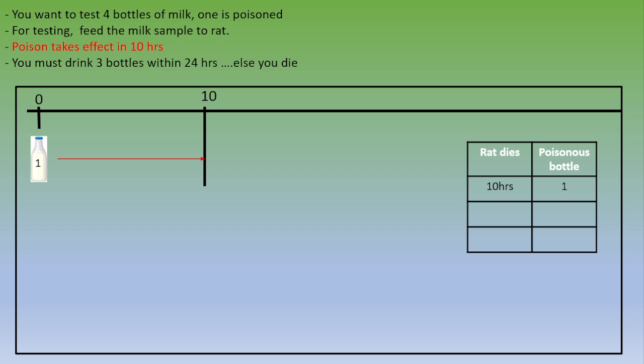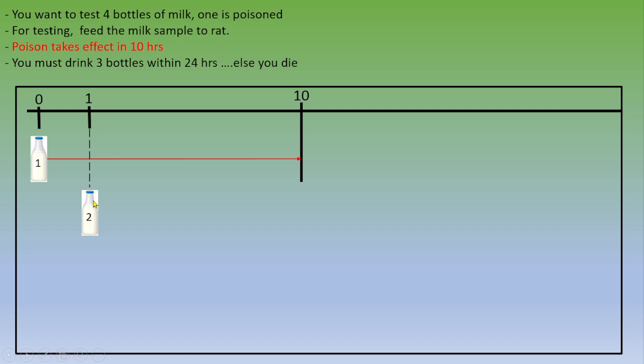Second option is the rat will survive. Then you want to test bottle two and bottle three and bottle four, but you don't have enough time to wait. So you need to test bottle two one hour after testing bottle one.